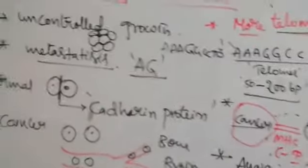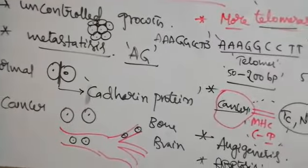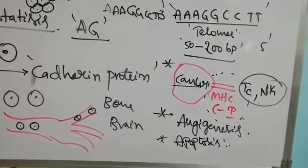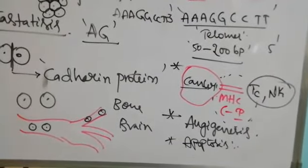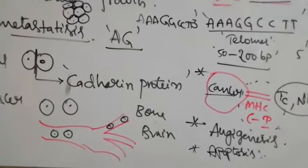These are the characteristics of cancer: contact inhibition loss, uncontrolled growth, metastasis, more telomerase presence, specific antigen expression, angiogenesis, and loss of apoptosis. All these are the main characteristics of cancer cells.